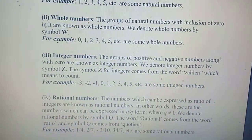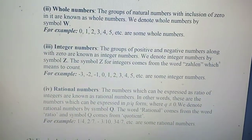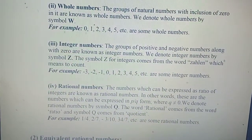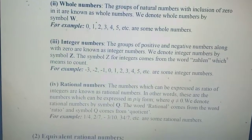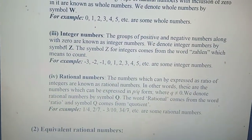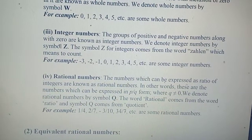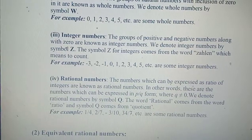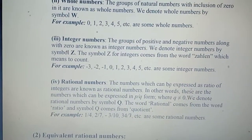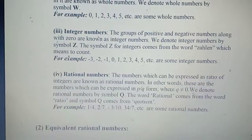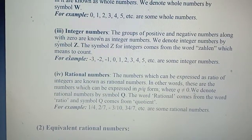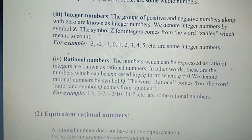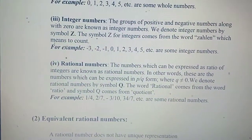Third are integers. The groups of positive and negative numbers along with 0 are known as integers. We denote integers by symbol capital Z. The symbol Z comes from the word meaning 'to count.' Here are examples of integers: −3, −2, −1, 0, 1, 2, 3, 4, 5 — these are all considered to be integers.